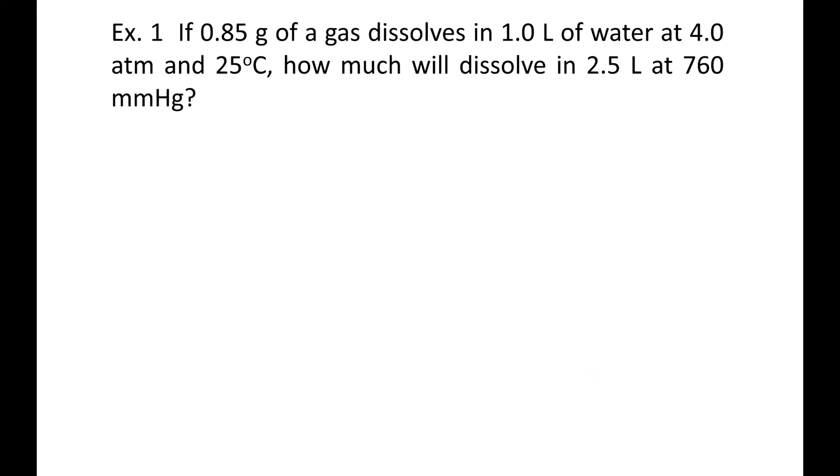Example one: If 0.85 grams of a gas dissolves in one liter of water at 4 atmospheres and 25 degrees Celsius, how much will dissolve in 2.5 liters at 760 millimeters of mercury? Before we can begin, we need to get two different things. First off, we're looking for solubility. I don't see any grams per liter here. So we do have grams, and we have a liter. So S1 is 0.85 grams, and since it is in one liter, not two liters, but one liter, that means it's 0.85 grams per liter. Now, P1 is your pressure, and it's at 4.0 atmospheres.